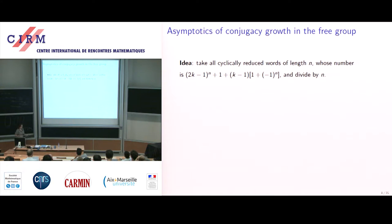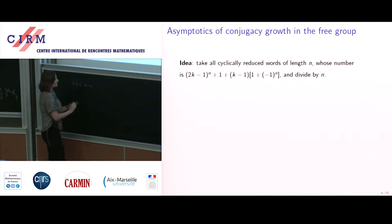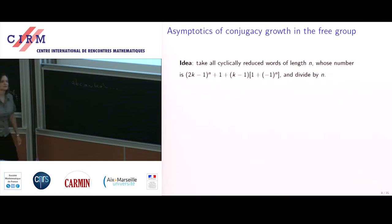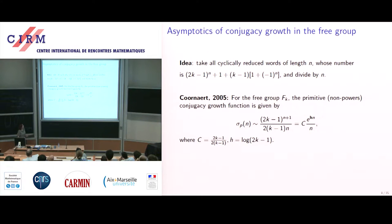To count conjugacy classes of length exactly n in a free group, you take the cyclically reduced words of length n — and people have computed that in several papers. Then all cyclic permutations are conjugates, so you divide by n (or by the appropriate period for powers). Conradt did this in a 2005 paper for the free group F_k: he has the formula for cyclically reduced words and divided by n to get the conjugacy growth.